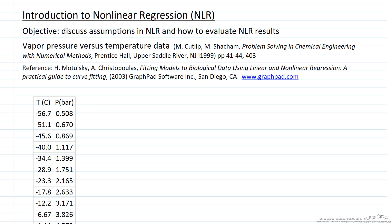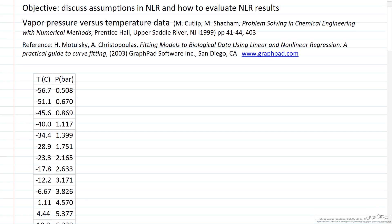Here I'm going to provide a brief introduction to non-linear regression, talk about some of the assumptions, and how we evaluate the results. I'm using data from the Problem Solving Chemical Engineering with Numerical Methods book. The data being used is vapor pressure data — temperature and the vapor pressure at that temperature — and the idea is we want to fit this to Antoine's equation.